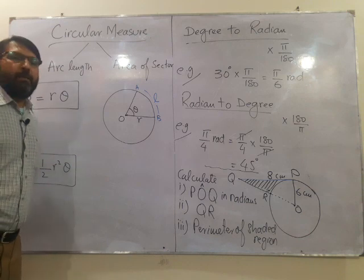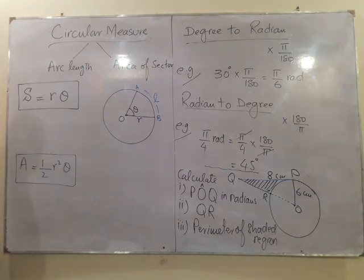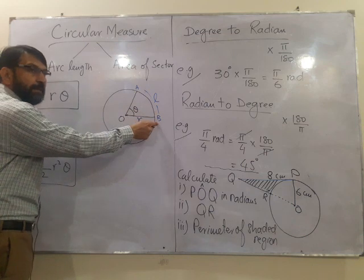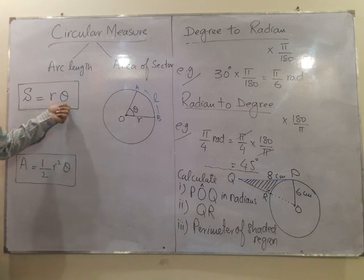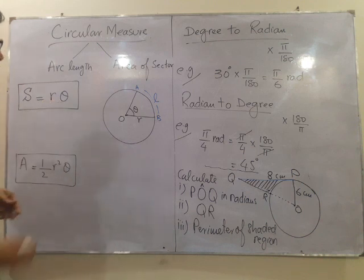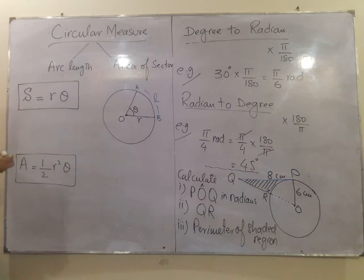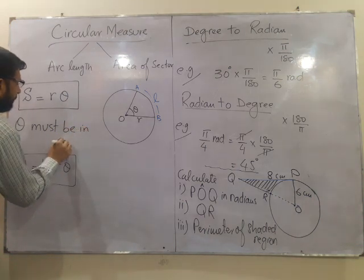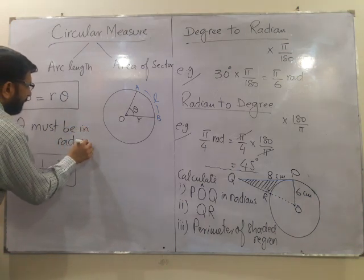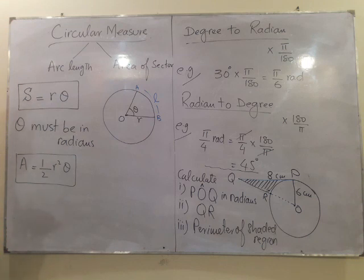Now let us see the formula we will be using for finding the arc length. This circular arc is quite simple to find out by just multiplying radius with the value of the angle. But here the most important thing is that theta must be in radians. And to solve these sort of questions do not forget to change your calculator to radian mode.